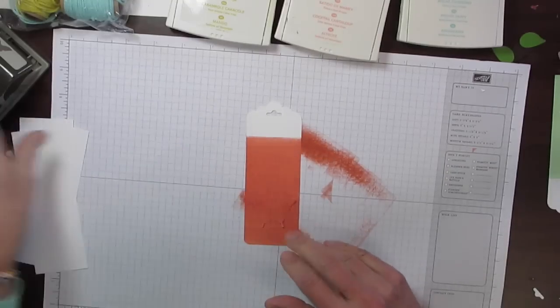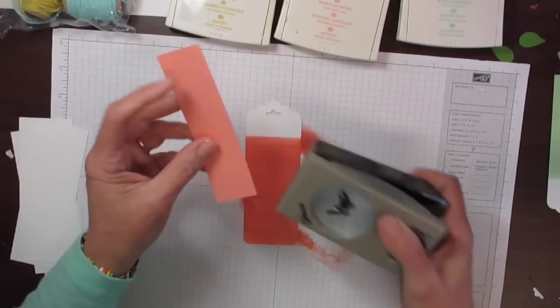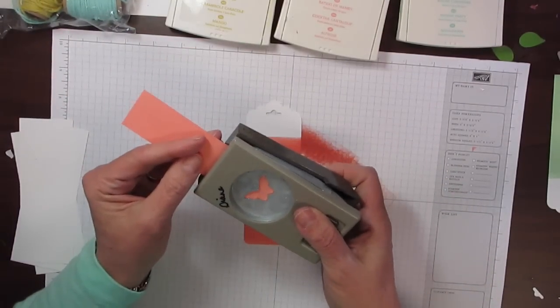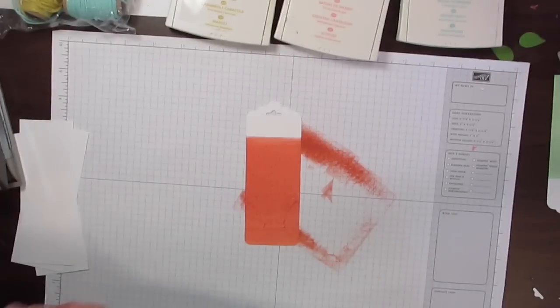Then I'm going to go ahead and finish off the rest of this card. So I'm going to come in with another piece of Crisp Cantaloupe and this tiny little Butterfly Punch and I'll punch one of those out.